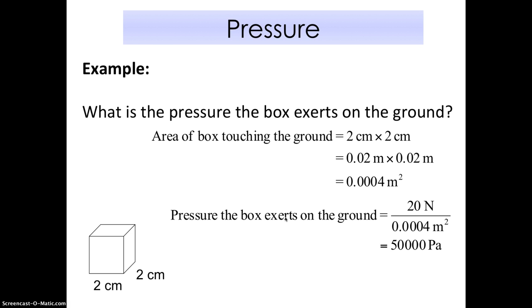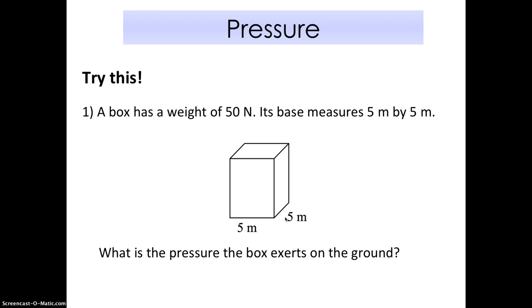After that we can move on. Let's move on to the next question. I want you to try this yourself now. A box has a weight of 50 newtons, its base measures 5 meters by 5 meters. What's the pressure of the box exerting on the ground? Remember we have force here, weight is a force. We need to divide by the area facing the ground. Find the area facing the ground, then take force divided by area. Pause this video now to try by yourself.